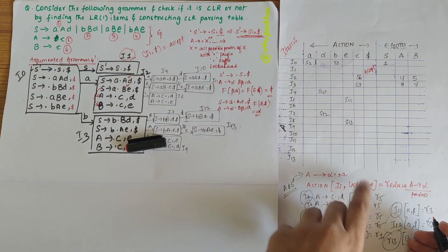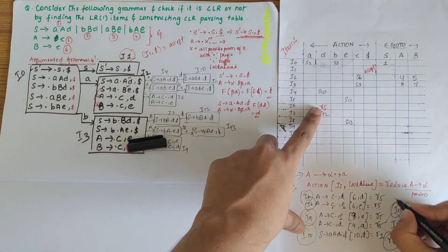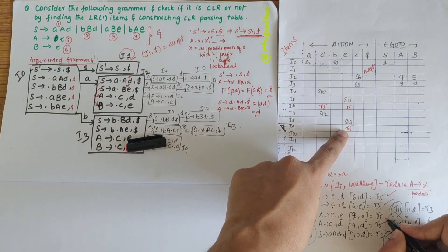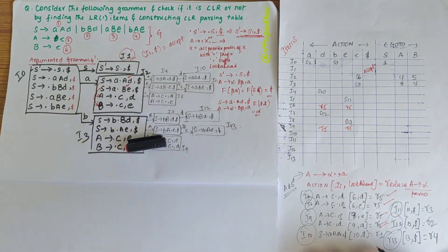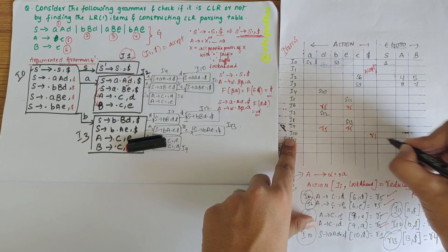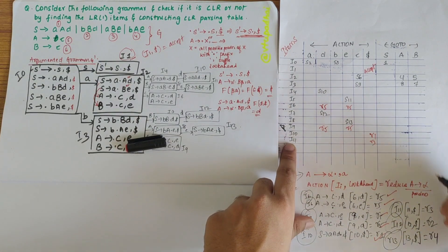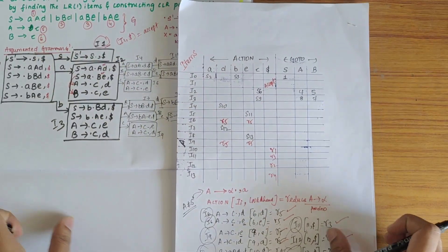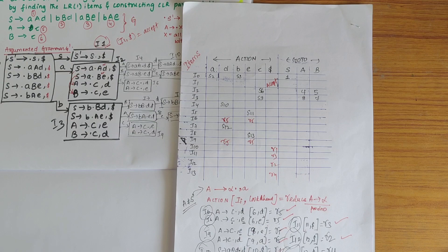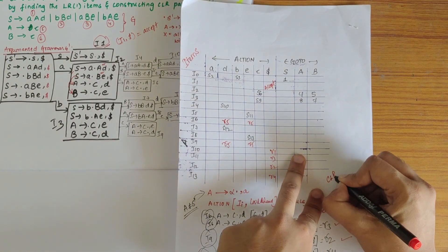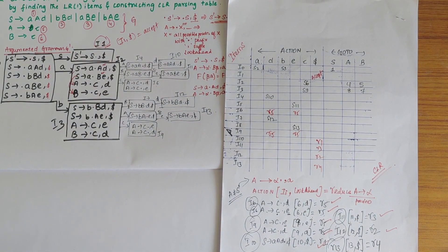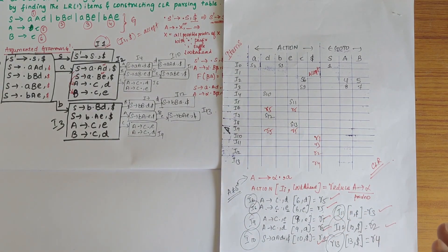Now filling the table: (6,d)=R5, (6,e)=R5, (9,e)=R5, (9,d)=R5, (10,$)=R1, (11,$)=R3, (12,$)=R2, (13,$)=R4. Checking the parsing table, there are no multiple entries in any single cell — no conflicts. So we can confirm that the given grammar is CLR. I hope you understood how to find the LR(1) items and check if the given grammar is CLR or not.